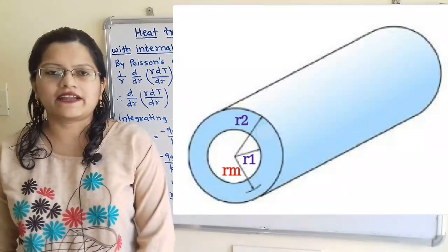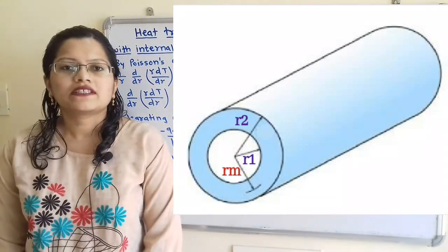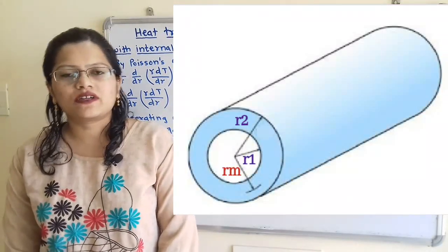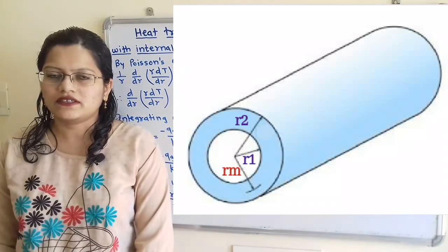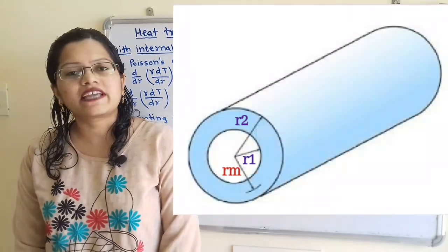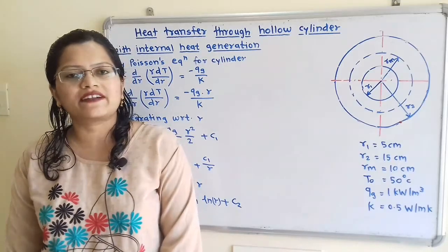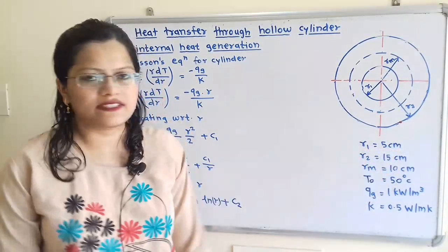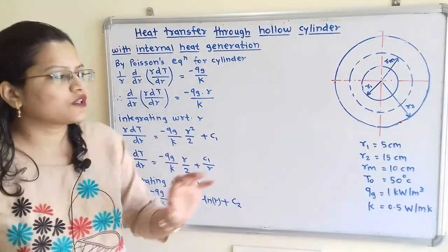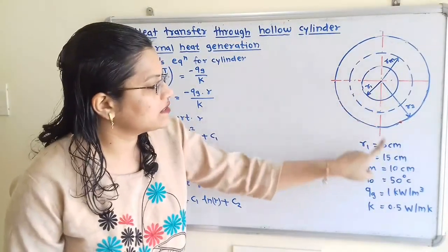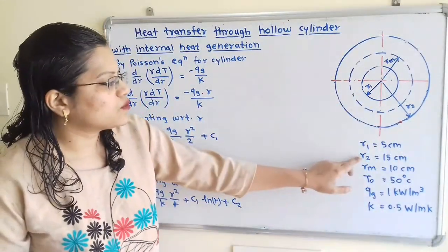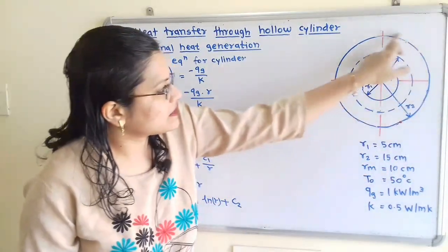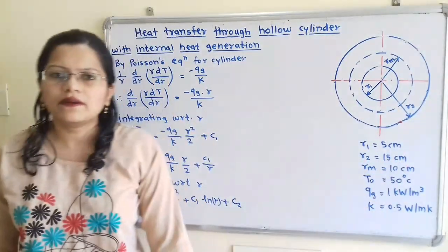Let us understand the given data with the help of a diagram. This is the case of a hollow cylinder. The inner and outer radii are given. The radius values are given in centimeters but in calculation we have to use standard units, that is meters. So for the inner radius R1 = 5 cm = 0.05 m. We draw the circular cross section. Here R1 = 0.05 m and R2, the outer radius = 15 cm = 0.15 m.